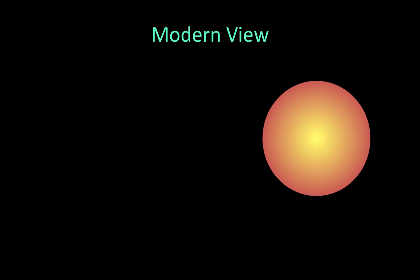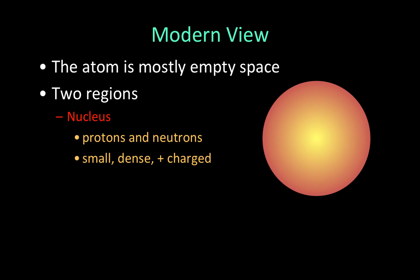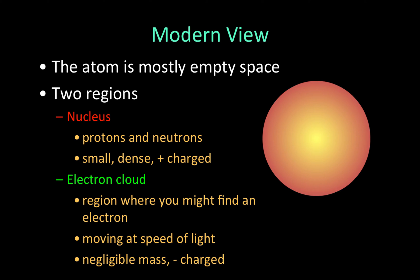This picture shows energy being absorbed in blue and energy being released in green. The modern view of the atom: the atom is mostly empty space. There are two regions — the nucleus, made up of protons and neutrons, which is small, dense, and positively charged; and the electron cloud, the region where you might find an electron. The electrons are moving at the speed of light, have negligible mass, and are negatively charged.